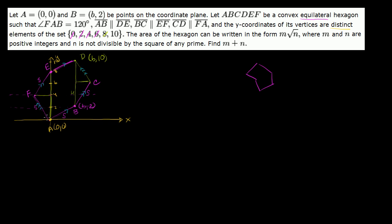Now we need to find the area of this hexagon, and a good starting point is to figure out what s is. This isn't an equiangular hexagon — it's kind of skewed — but all sides are the same length. Let's call the angle that side AB makes with the horizontal theta. And they tell us that angle FAB is 120 degrees, so the angle on the left side is 180 − 120 − θ = 60 − θ.